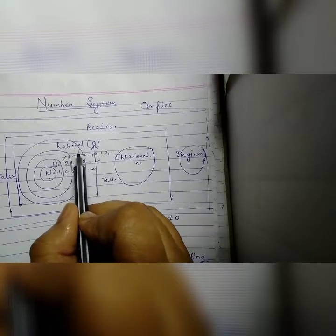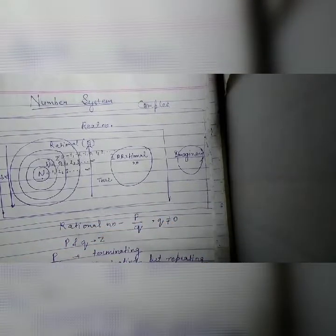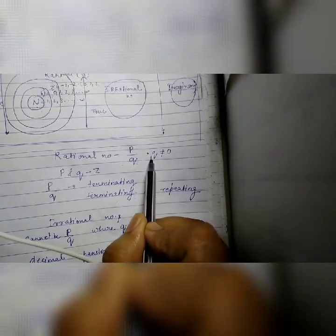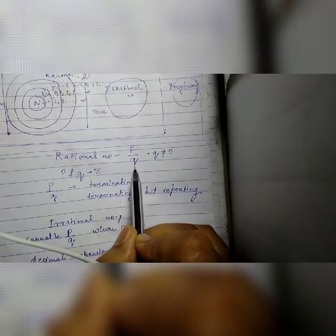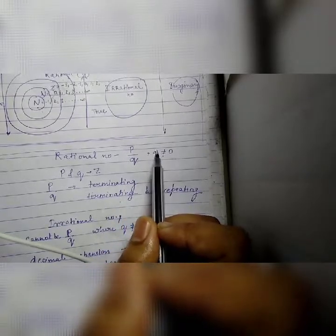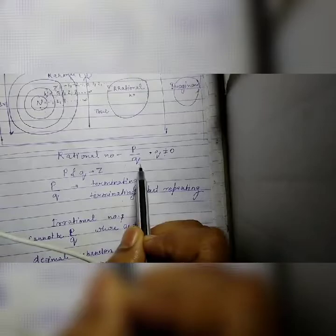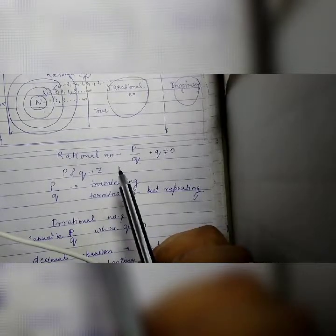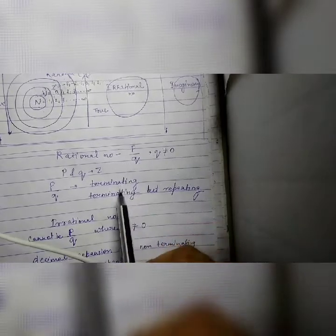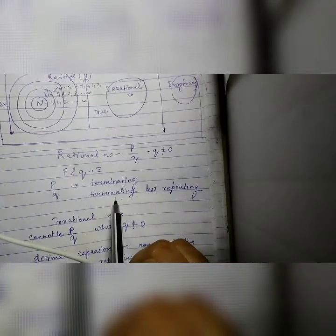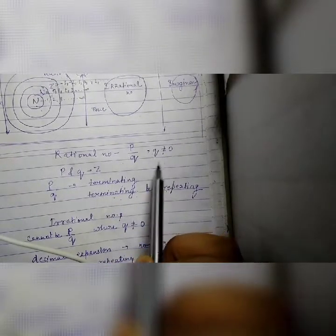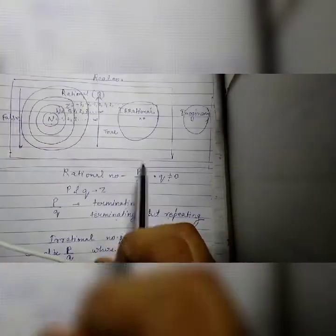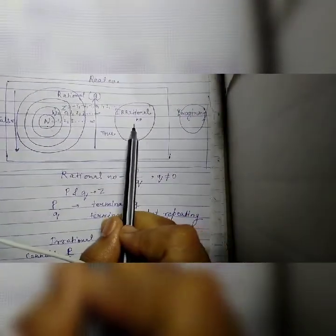After that, we have rational numbers. The rational numbers are which we can write in the form of p by q, where q does not equal to 0. If q is 0, this condition will be non-determined, and here p and q should be two integers. So these numbers are called rational numbers.